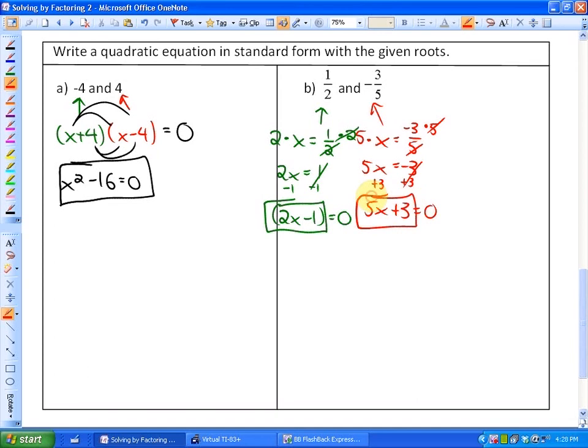So in other words, the quadratic equation in standard form with those given roots would be 2x minus 1 is one factor, 5x plus 3 is another factor, and that's equal to 0.